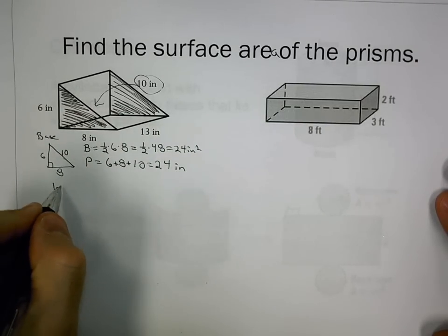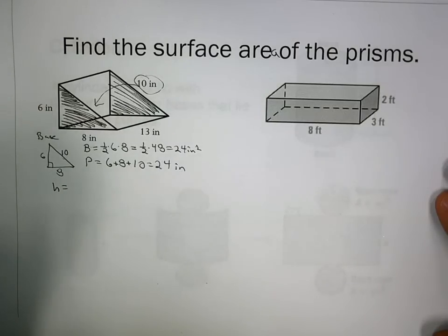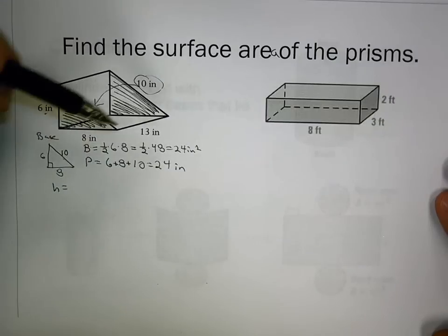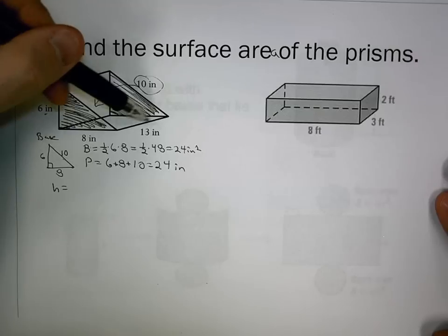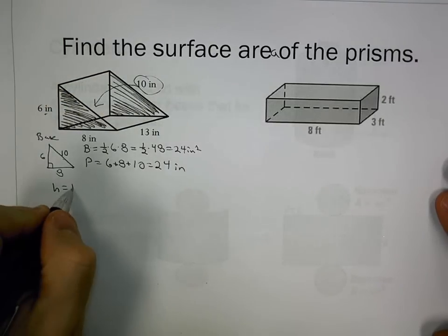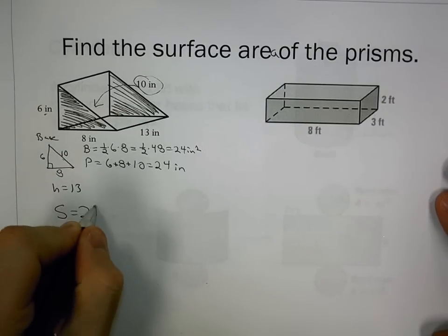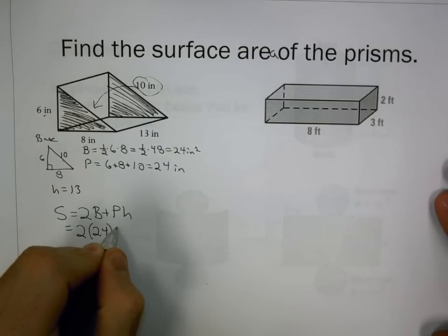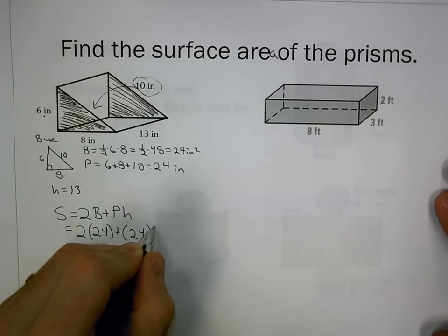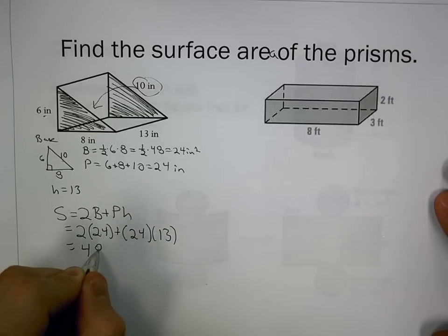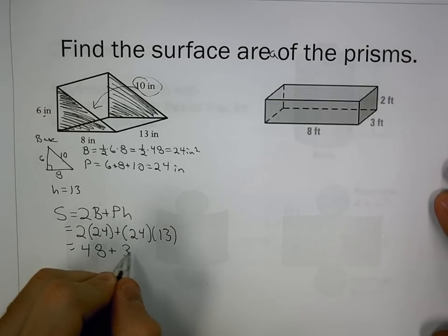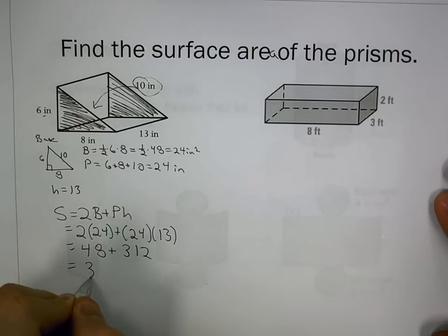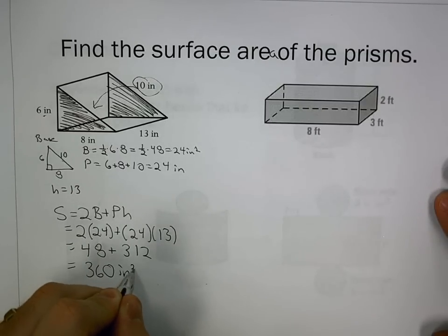The height of the prism is the distance between the bases. It's tempting to look at 6 because it represents a height, but the height of the prism is 13, also the value we haven't used yet. Plugging in our values, 2 times 24 is 48, 24 times 13 is 312, giving us 360 inches squared.